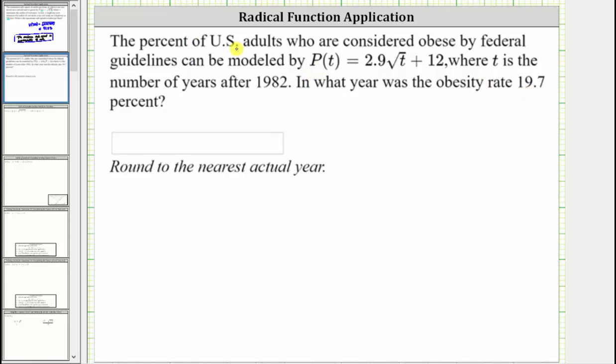Because P(t) represents the percent of U.S. adults who are considered obese, to answer the question we substitute 19.7 for P(t) and then solve the resulting equation for t, and then we use t to determine what year that represents.